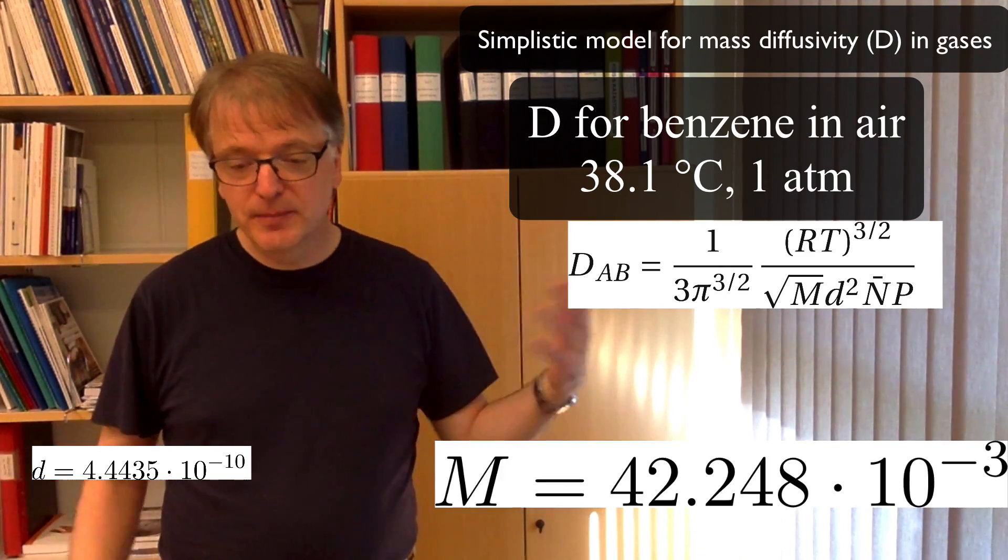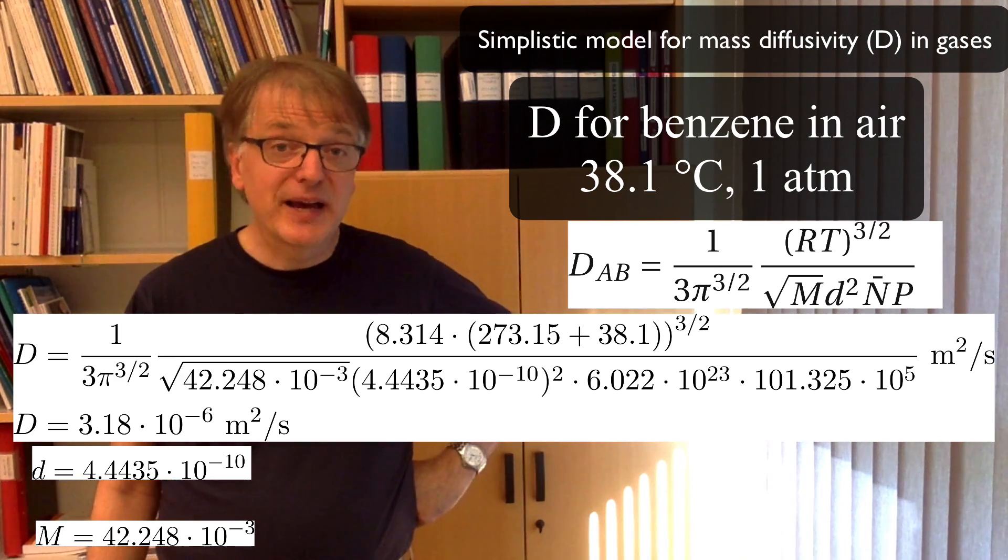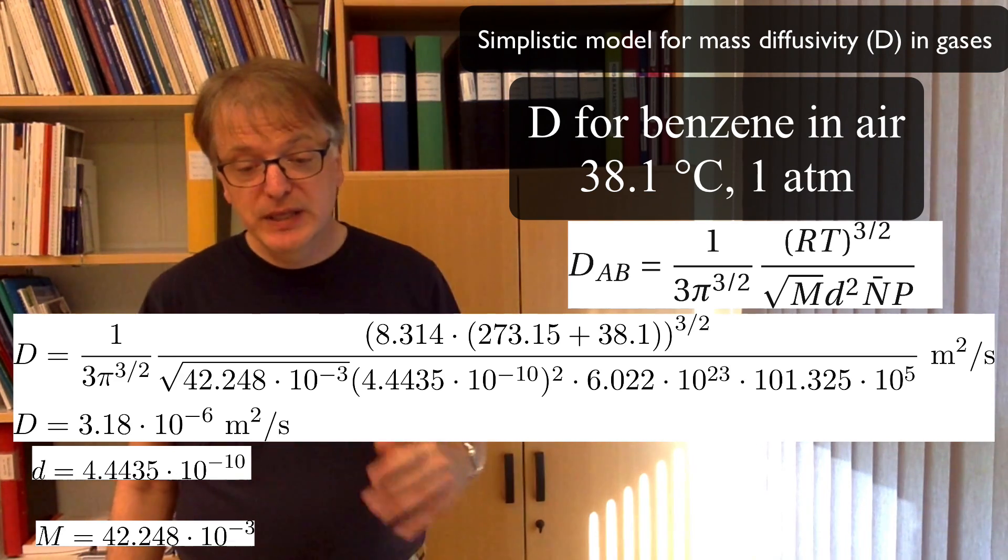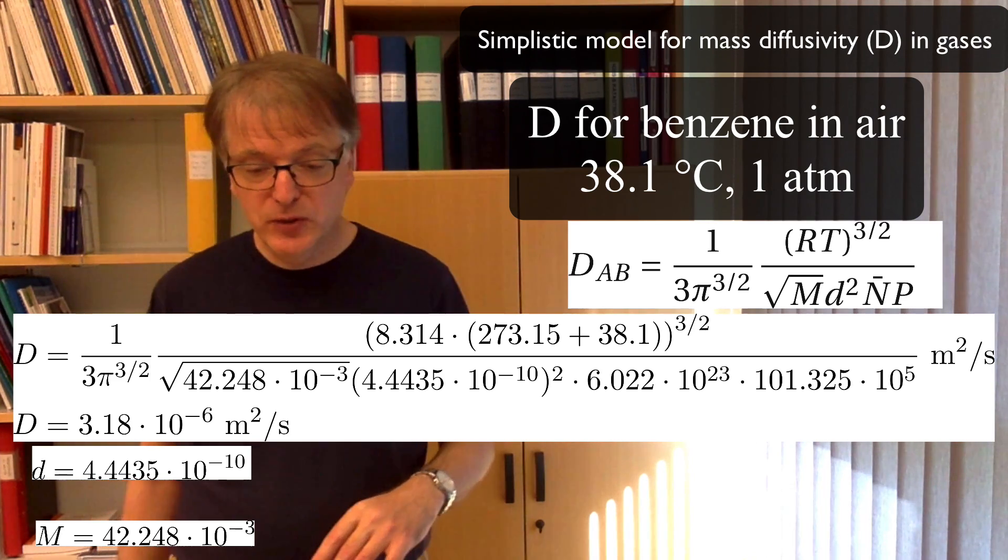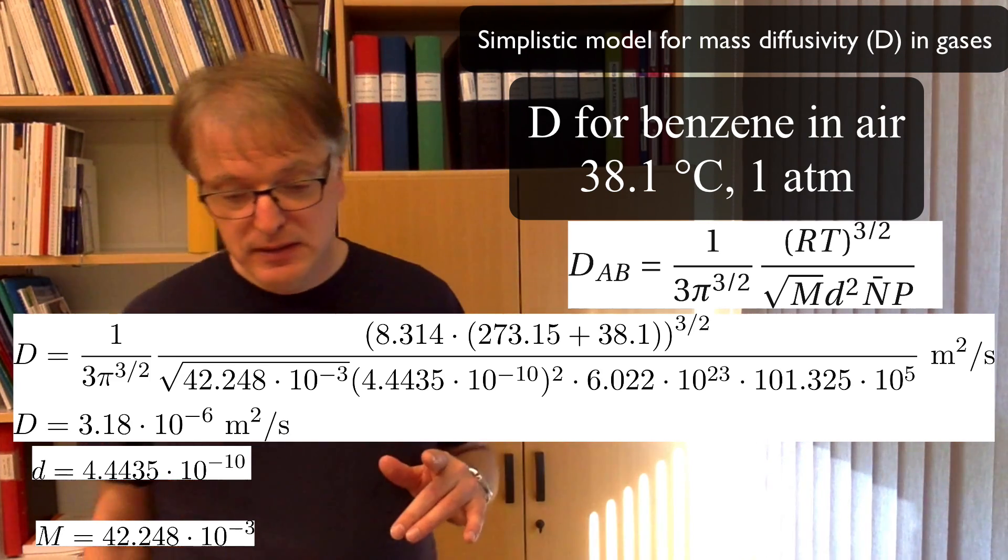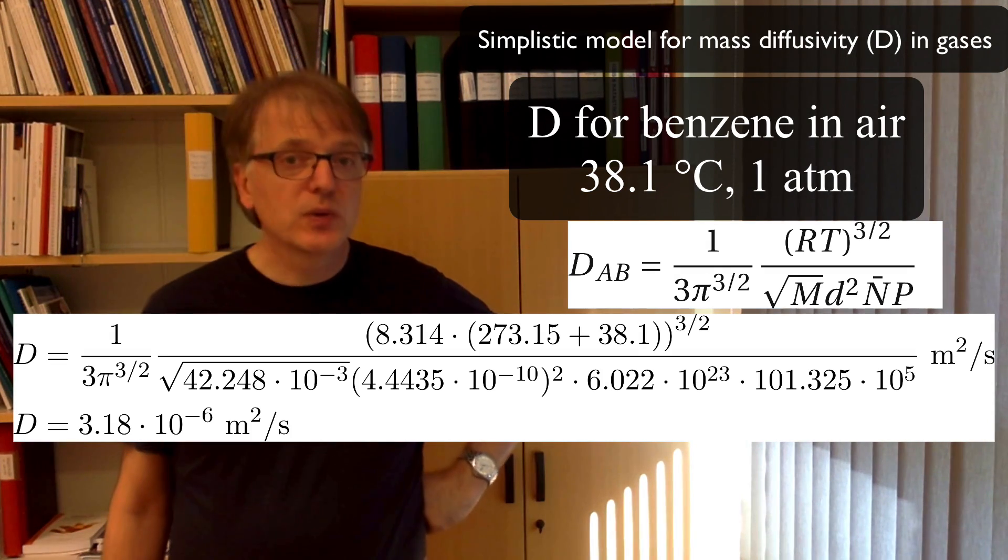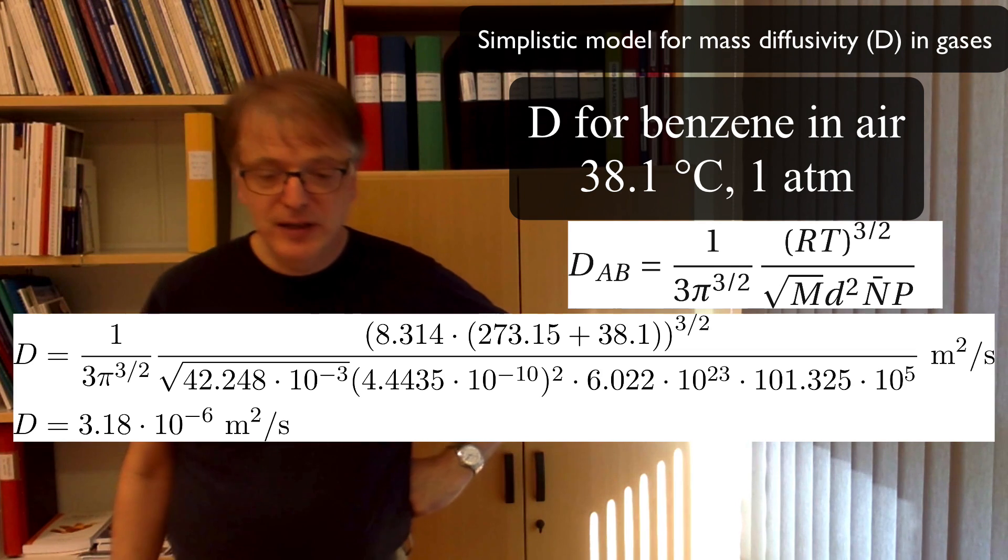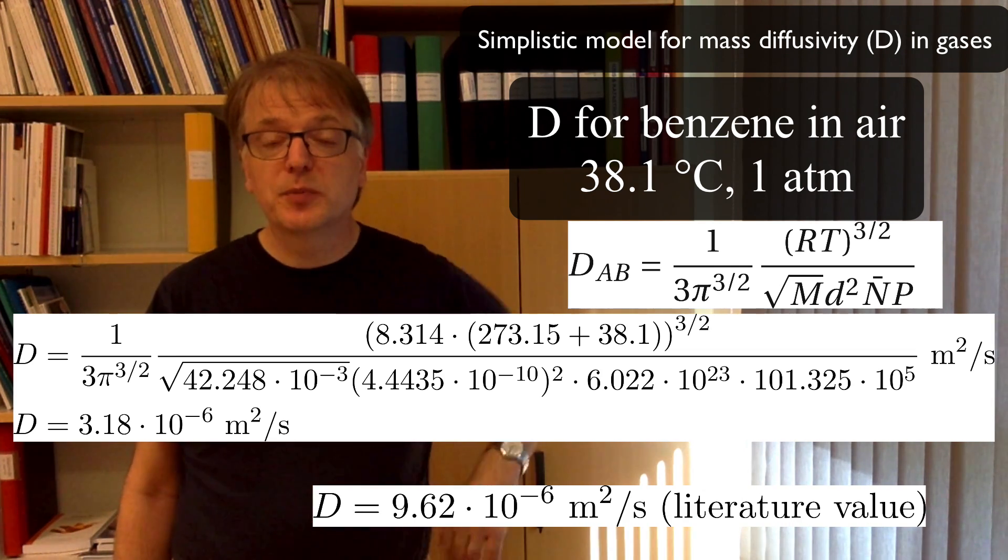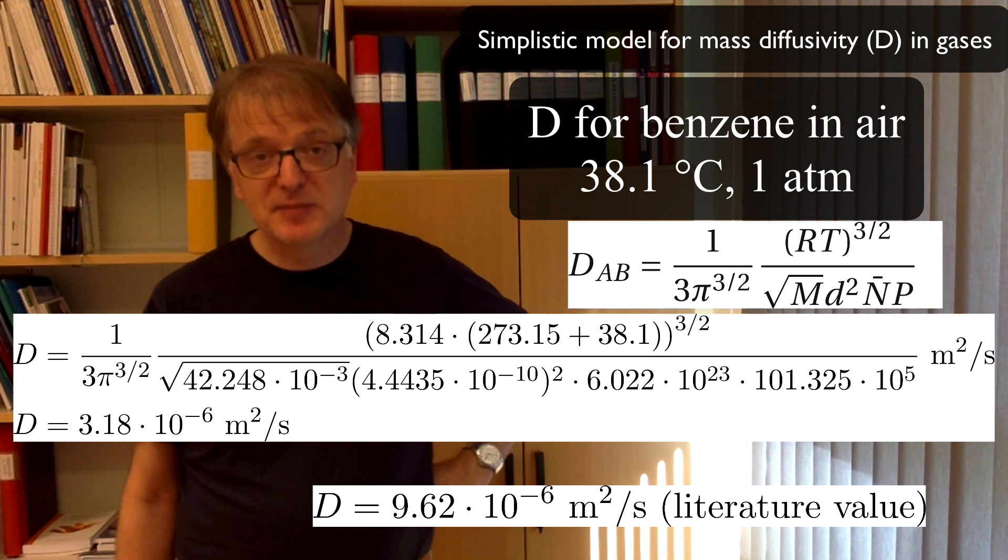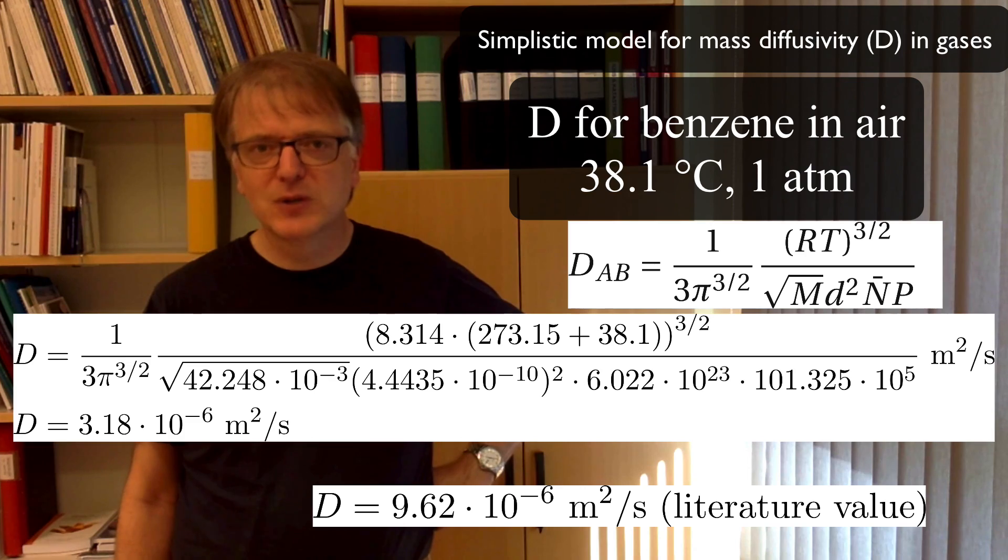And if you calculate that and put in all the values using this really bad equation, you get a diffusivity of 3.18 times 10 to the power minus 6 square meters per second. So what is the literature value? Well, the literature value is 9.62 times 10 to the power minus 6 square meters per second. So we're off with a factor of three, which is not good.